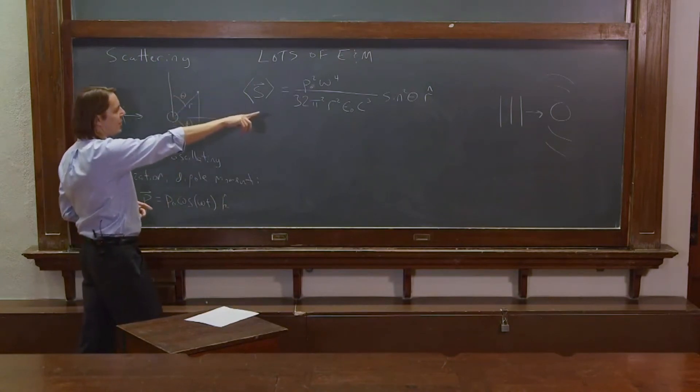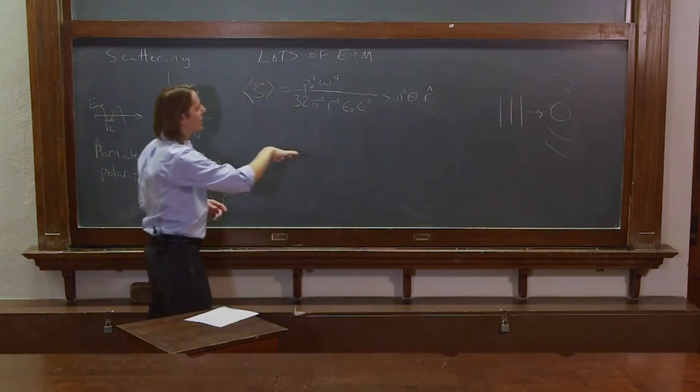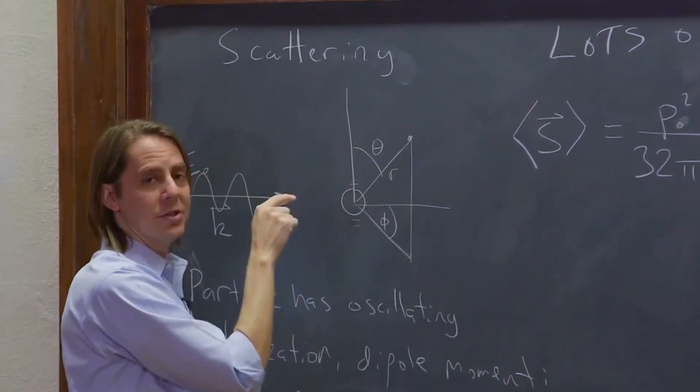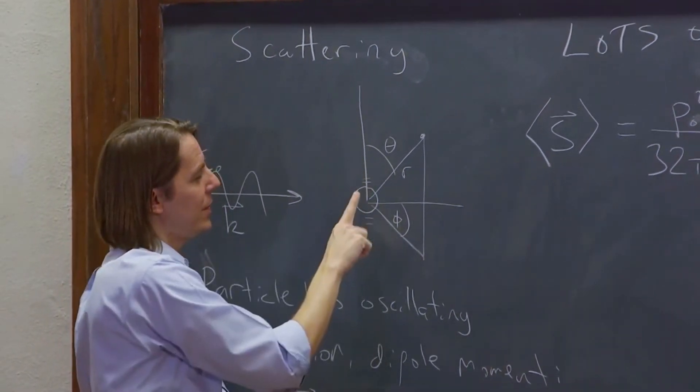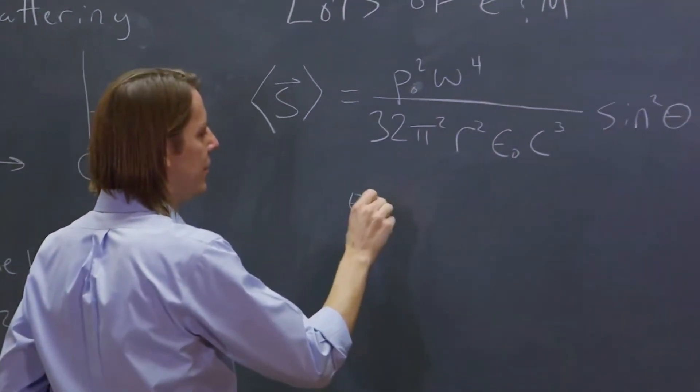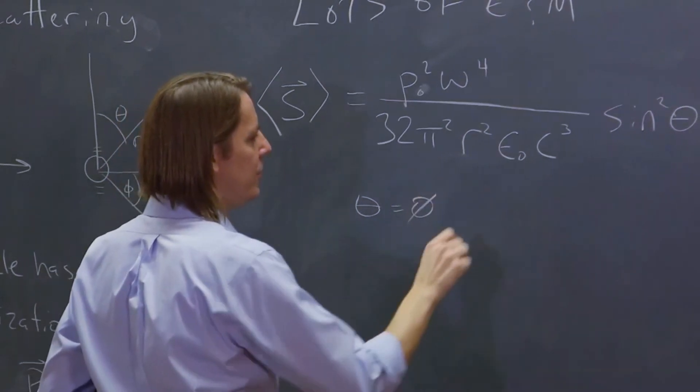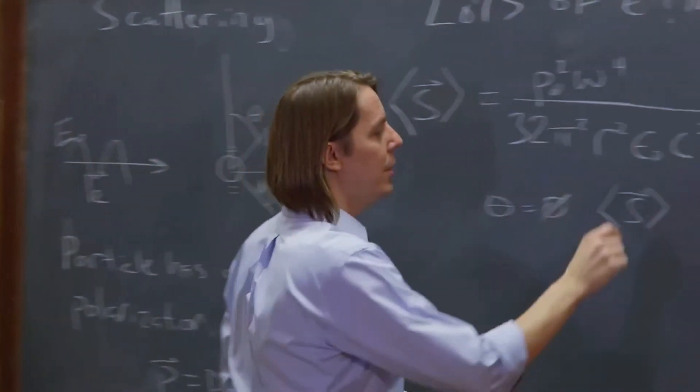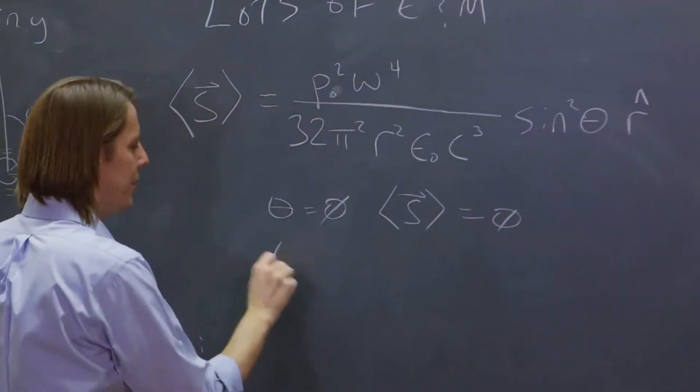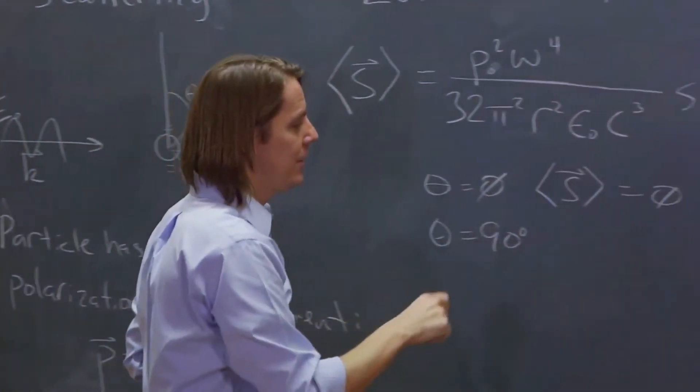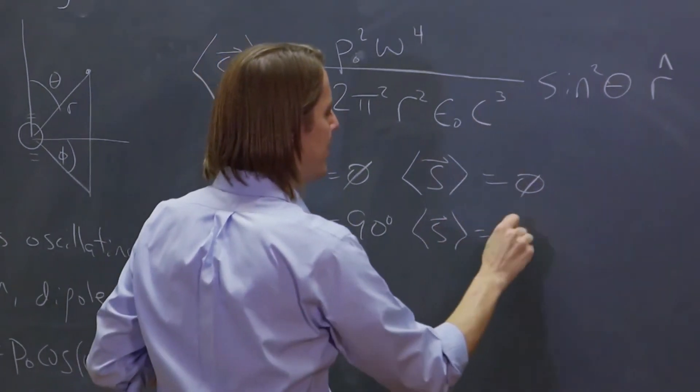You'll also notice that it's got a sine squared theta in here for the polar angle. And that's what tells you that the dipole only radiates perpendicular to the oscillation. It doesn't radiate along the direction of oscillation. So if we say theta equals 0 degrees, then that would be straight up and sine of theta is 0, so it would be 0. And if theta equals 90 degrees right along this original direction of the incident wave, then it is going to be maximum.